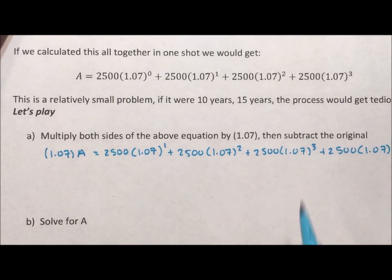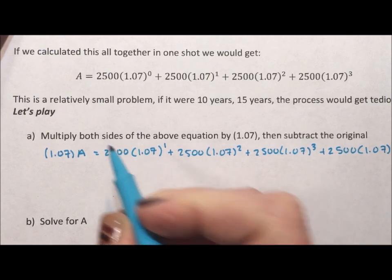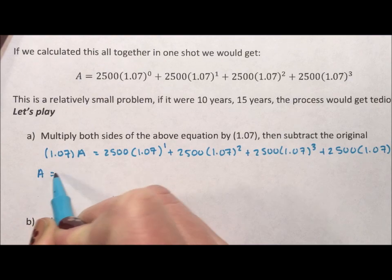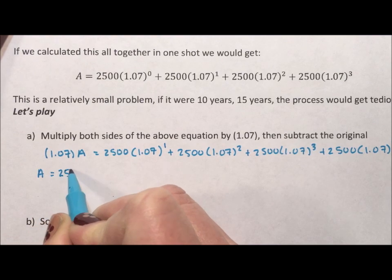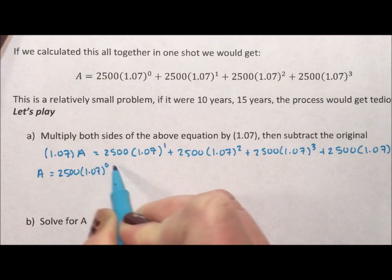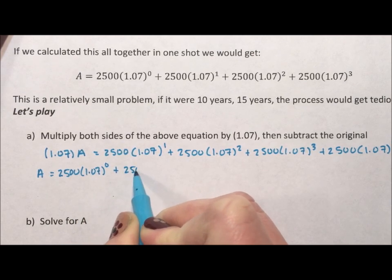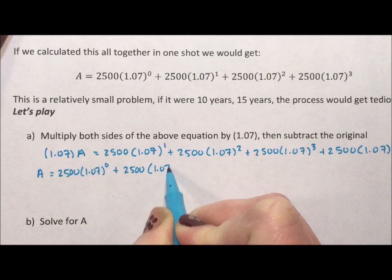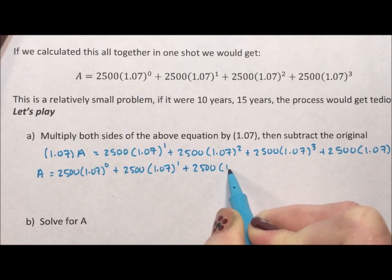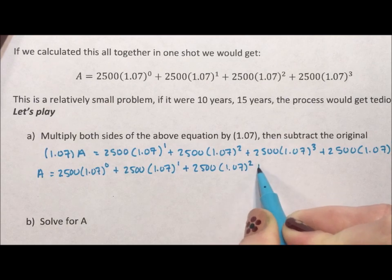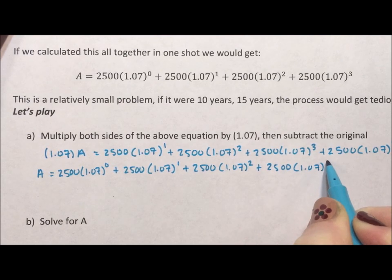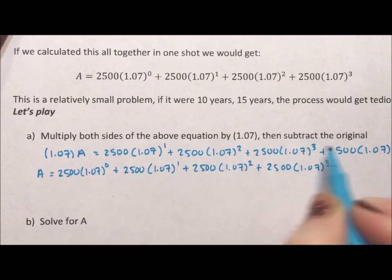Then it says subtract the original. Okay. So the original is A equals 2,500 times 1.07 to the 0 plus 2,500, 1.07 to the 1 plus 2,500, 1.07 squared plus 2,500, 1.07 cubed and then subtract.